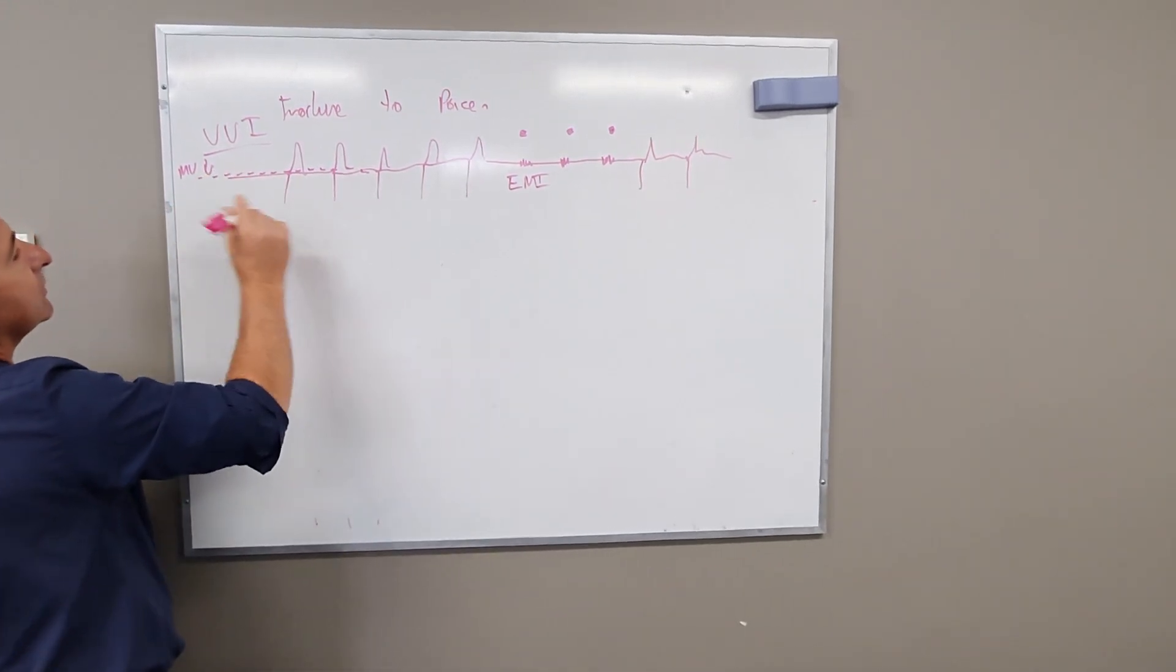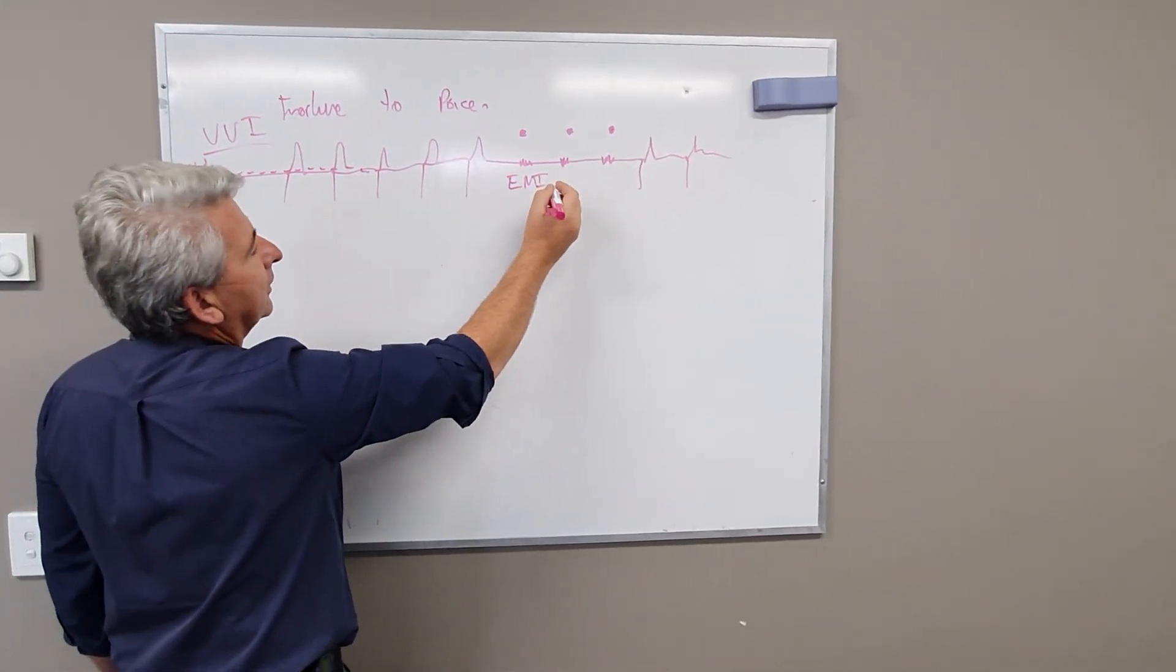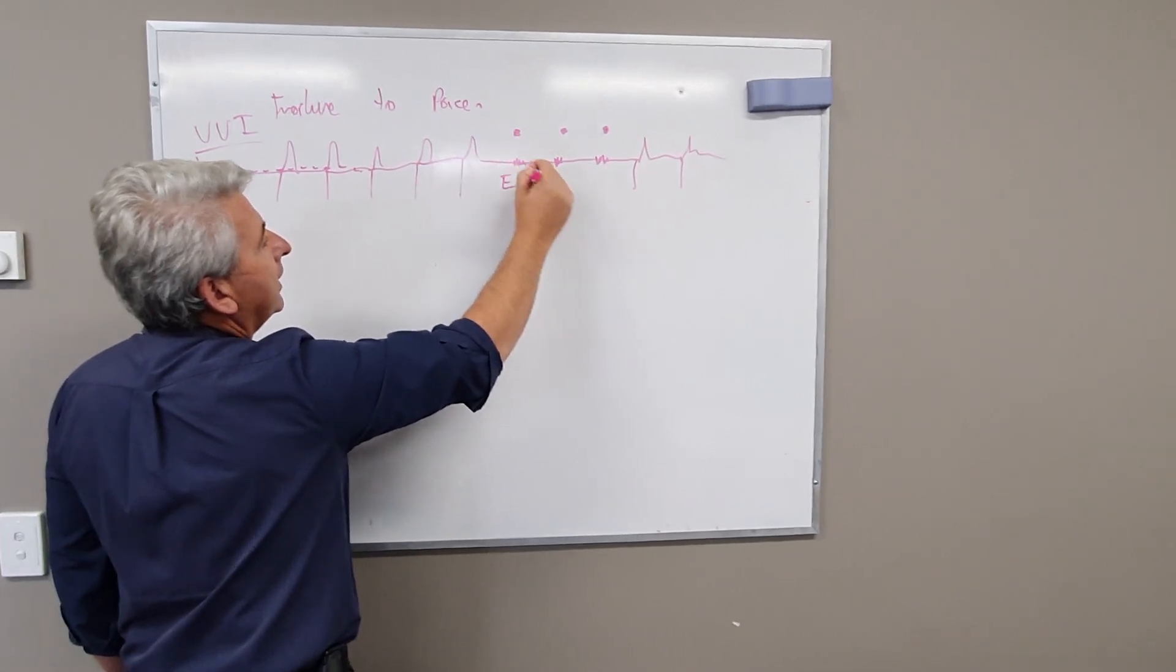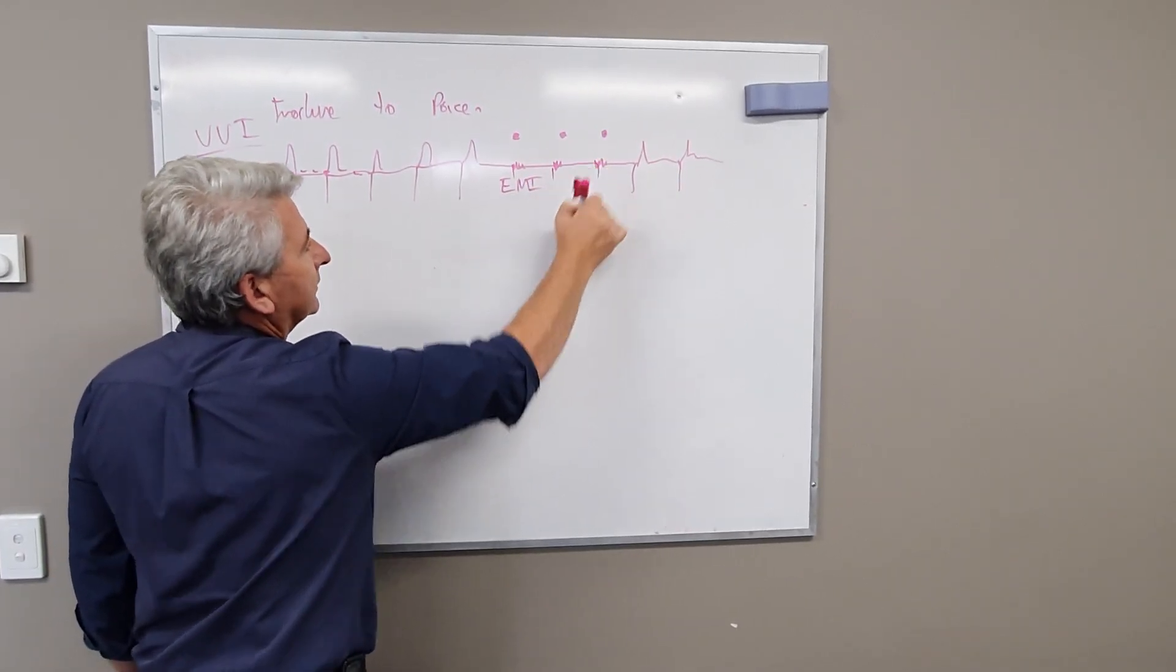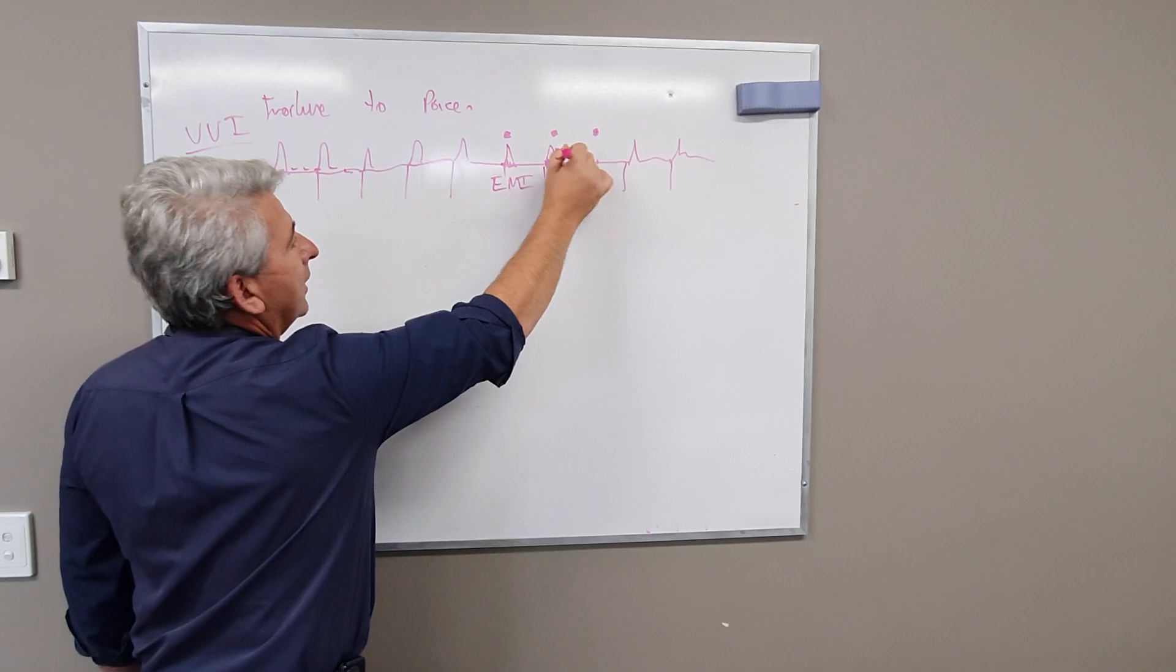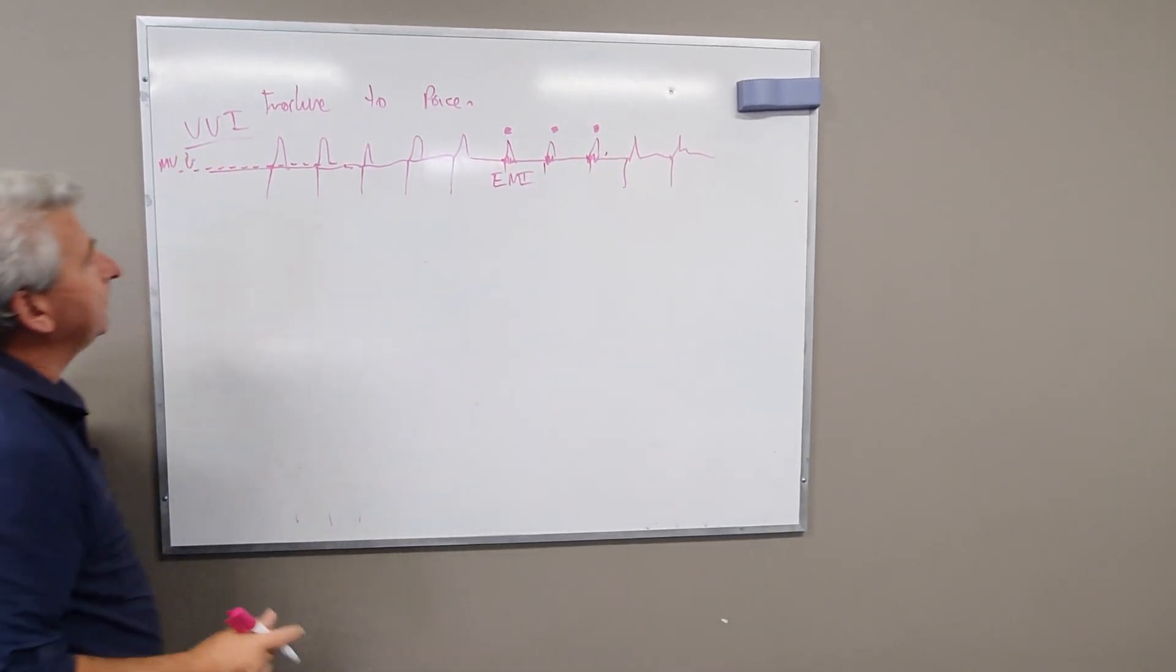How do you fix it? You just need to bump up the millivolts, and in essence what you're going to do is bring that off the line, and it'll actually start to pace, and it will be followed by a mechanical capture, and you'll have blood pressure.